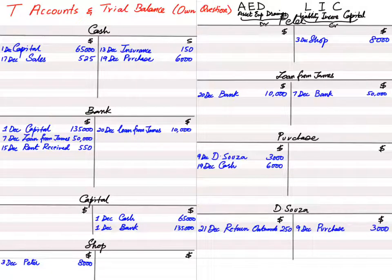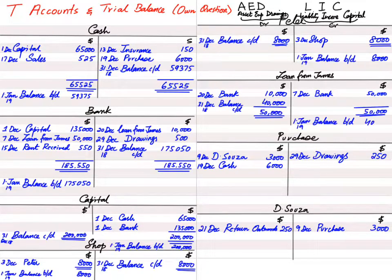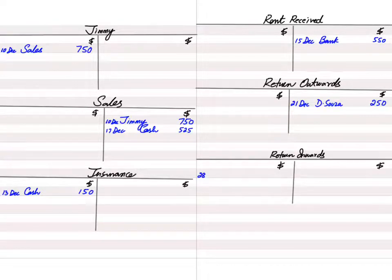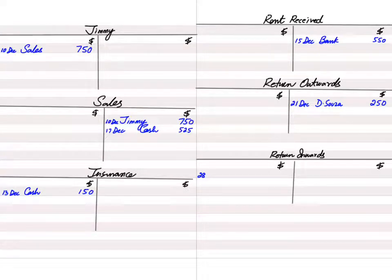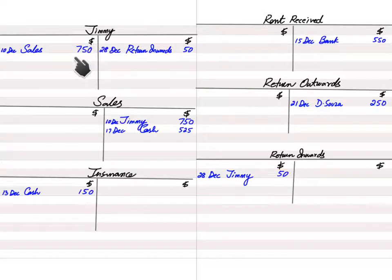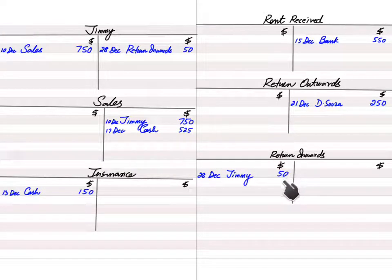Transaction 12: Jimmy returned goods to us. This is a return inward transaction — also known as sales return. When goods come back from a customer, the return inward account is debited with reference 'Jimmy,' and Jimmy's account is credited with reference 'return inward.' When we sold goods to Jimmy, his account was debited; now that he is returning goods, his account is credited since his asset balance decreases.